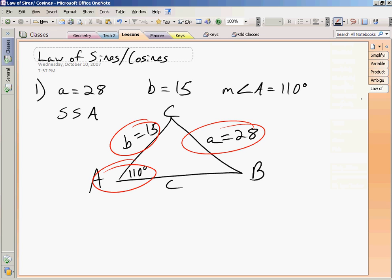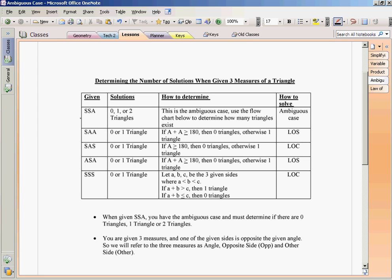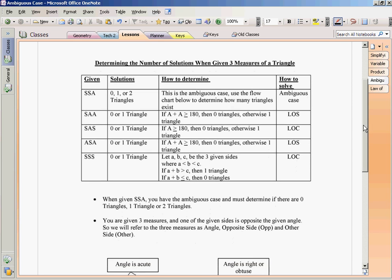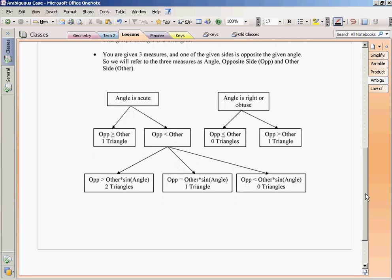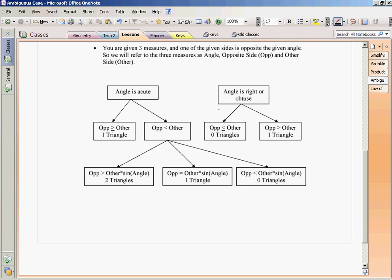So how do I solve a triangle with side-side-angle? Well, side-side-angle is the ambiguous case. In the ambiguous case, I'm going to use the Law of Sines eventually if there is a triangle to solve. This flowchart is going to help me understand how many triangles exist with those particular measures.